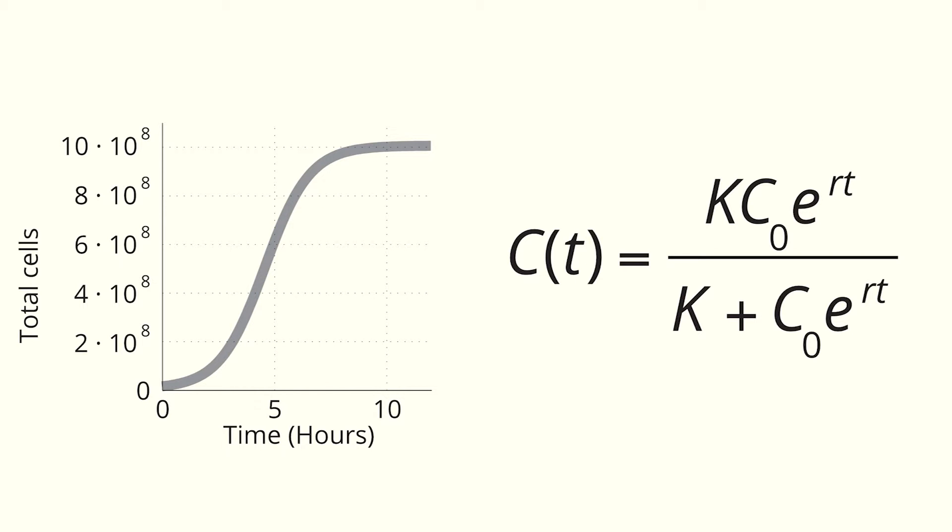When we look at a logistic growth curve, we can think of three phases of bacterial growth. Here in the exponential phase, cells have unlimited resources, and the growth is almost exponential. Here in the log phase, cells continue to grow, but more slowly. And finally, in the stationary phase, resources are exhausted and growth stops.